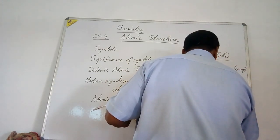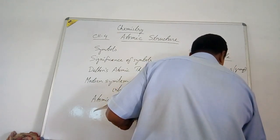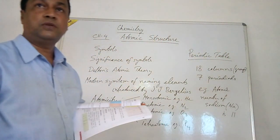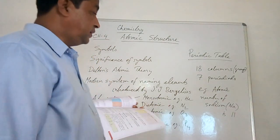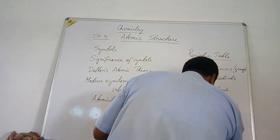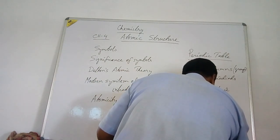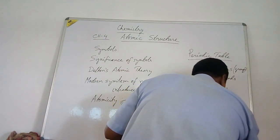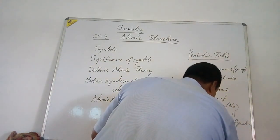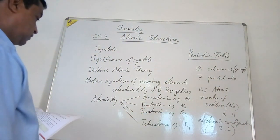Let's take an example. The atomic number of sodium is 11. Using this, we can determine the electronic configuration of sodium. The electronic configuration of sodium is 2, 8, 1.